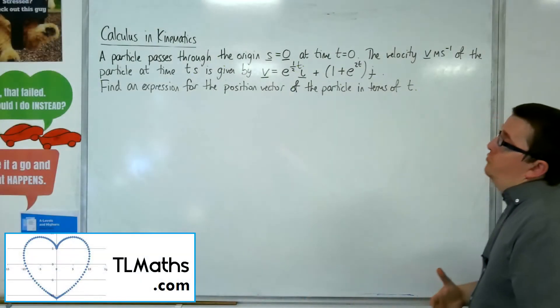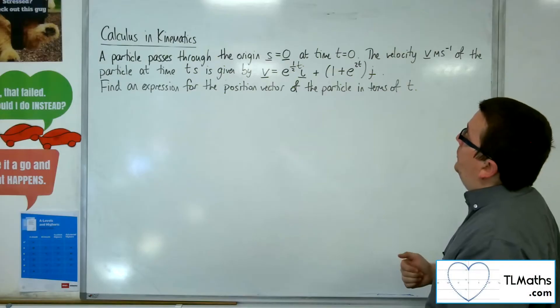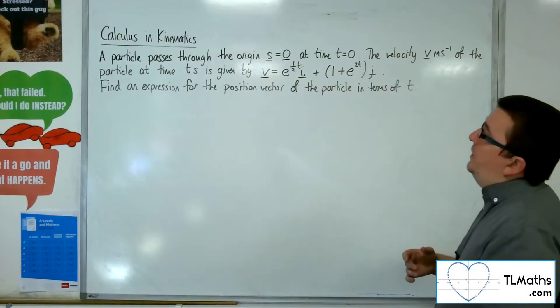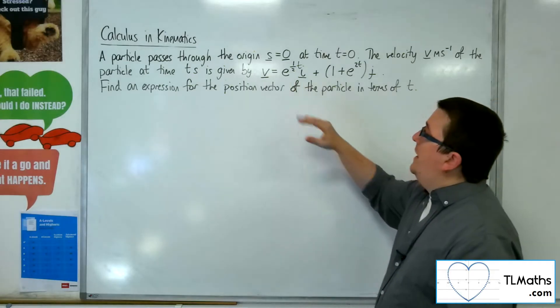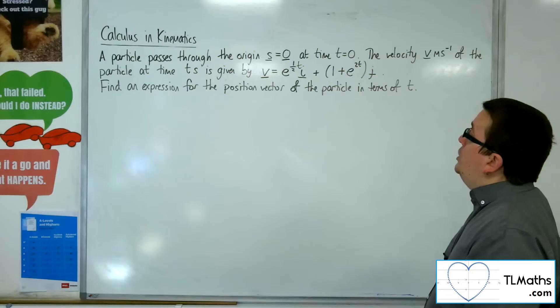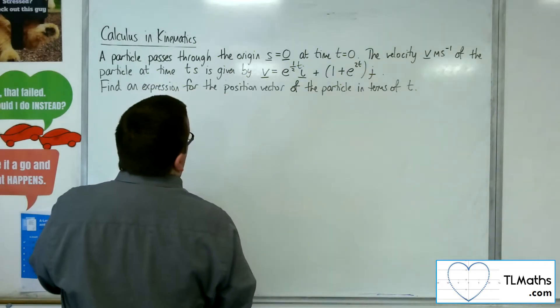For this video, we have this problem. A particle passes through the origin s equals 0 at time t is 0. The velocity v metres per second of the particle at time t seconds is given by v equals e to the half t i plus 1 plus e to the 2t j. Find an expression for the position vector of the particle in terms of t.